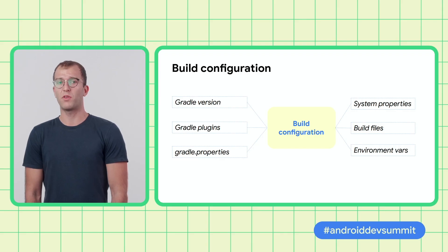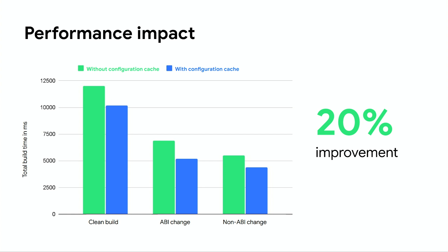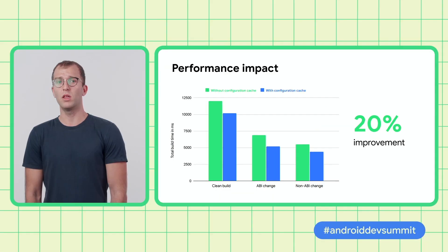Your build setup fully defines the result of the configuration phase. Configuration cache captures those inputs — for example, Gradle properties and the content of your build files — and together with the tasks you've requested to run, uniquely determines the tasks you'll execute. Looking at a Gradle build with 24 subprojects using the latest versions of Kotlin, Gradle, and AGP, you can see three different scenarios: clean build, incremental build that adds a public method, and incremental build that modifies a method body. In all scenarios, we are seeing 20% build speed improvement.